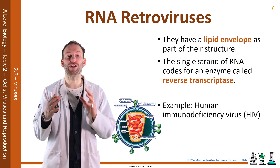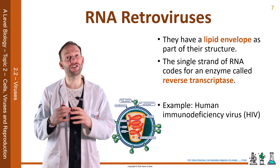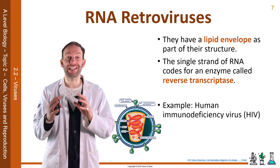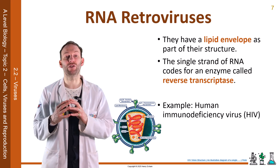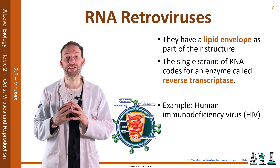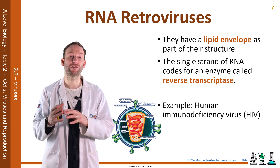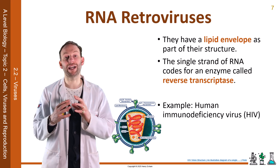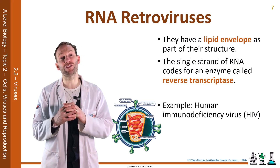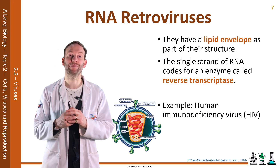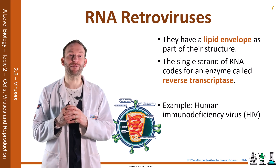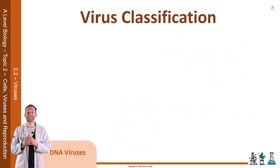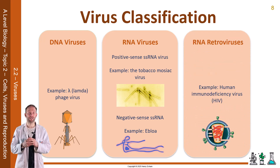An example of an RNA retrovirus is the human immunodeficiency virus, or HIV. HIV is a virus that attacks your immune system and limits your ability to fight off secondary infections. This can then lead to developing acquired immunodeficiency syndrome, or AIDS. So, the three types of virus are: DNA viruses, RNA viruses, and RNA retroviruses.